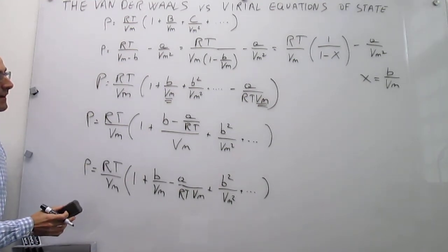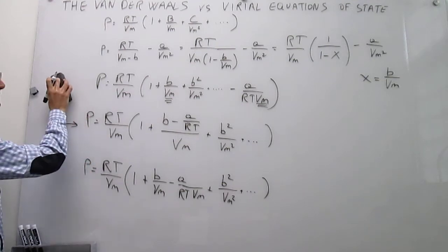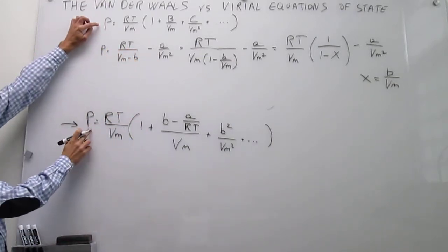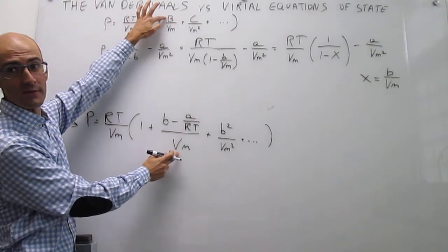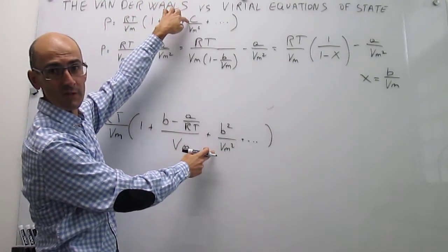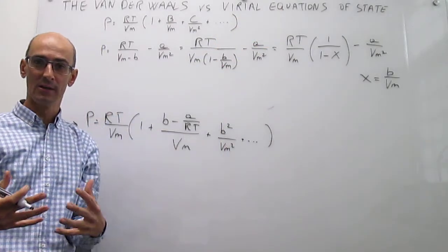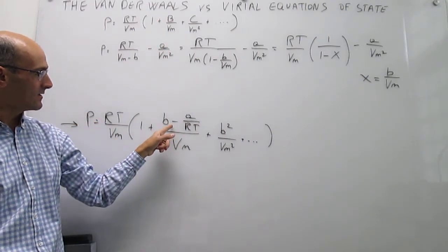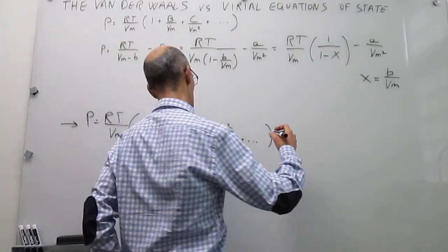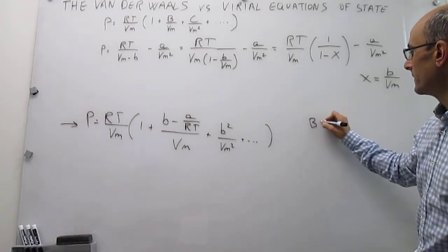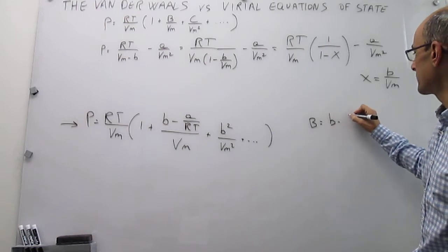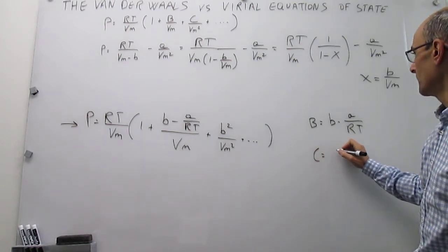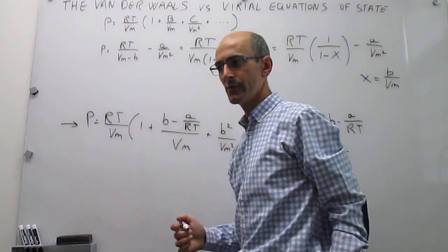Now we can compare the Van der Waals and Virial equations of state directly, since they have exactly the same type of terms. This means there is a direct relationship: the second Virial coefficient B equals b − a/RT, and the third Virial coefficient C equals b². You can continue to derive the higher-order coefficients in the same way.